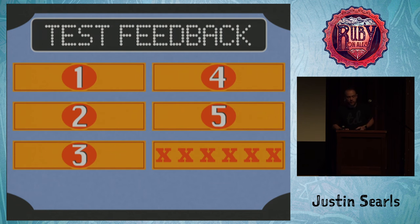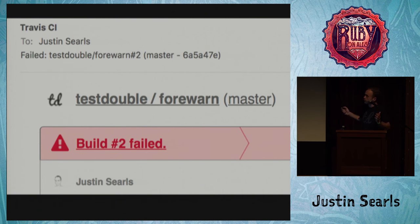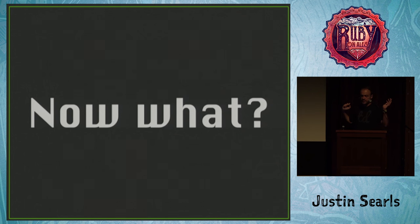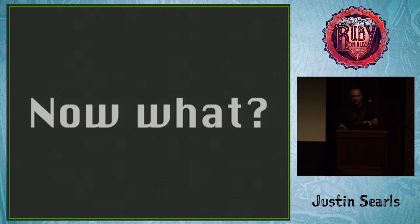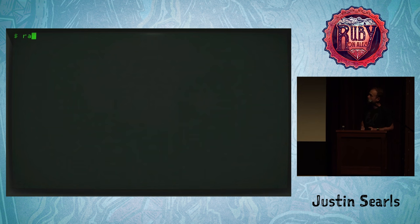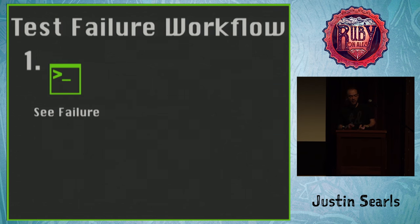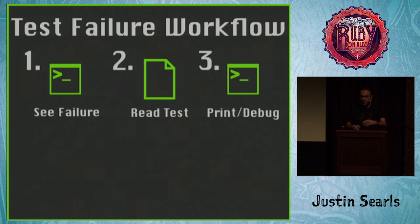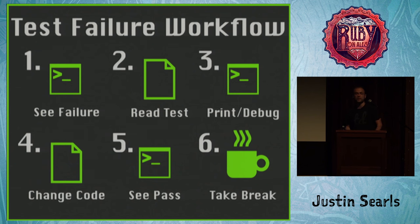Test feedback is the last thing we're going to talk about. I want to start with useless error messages because it's something that really sucks about living with a lot of test suites. Let's say I just broke the build. I run the test that just failed, pull it down, I look for the message to figure out what went wrong and I see: 'failed assertion, no message given.' That is not helpful. My workflow for solving this is: I see the failure, read the test, then I've got to put in print statements or actively debug to figure out what the values are. Then I can change the code, then I can see the test pass. And finally I need to take a break because that just took me 20 minutes. That's not a good workflow.